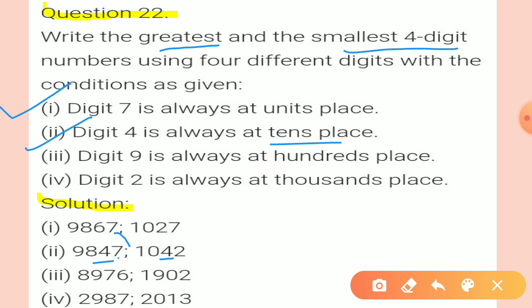Condition 3: digit 9 is always at the 100th place. Fix 9 on the 100th place. Greatest number: 8 at thousands, 9 fixed at hundreds, then 7, then 6 — giving 8, 9, 7, 6. Smallest number: 1 at thousands, 0 at hundreds — but 9 is fixed at hundreds, so: 1, 9, 0, 2.